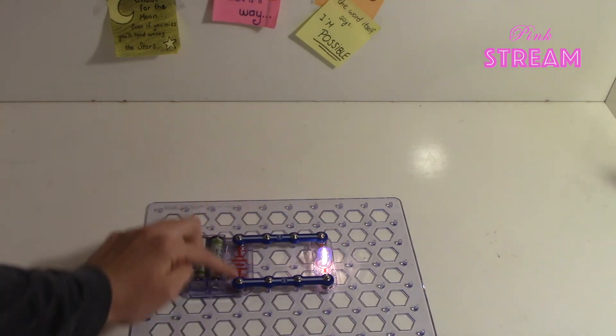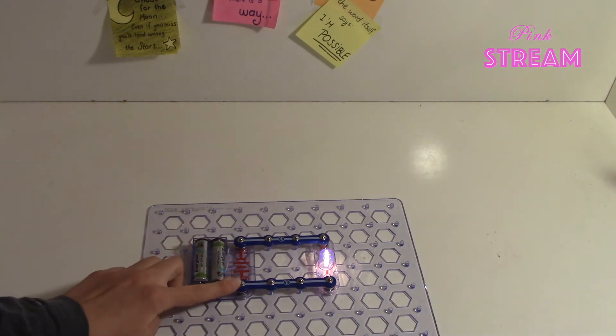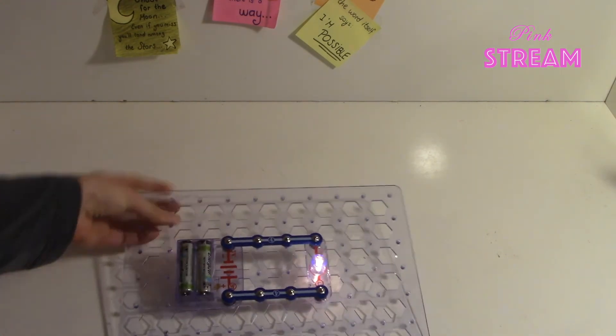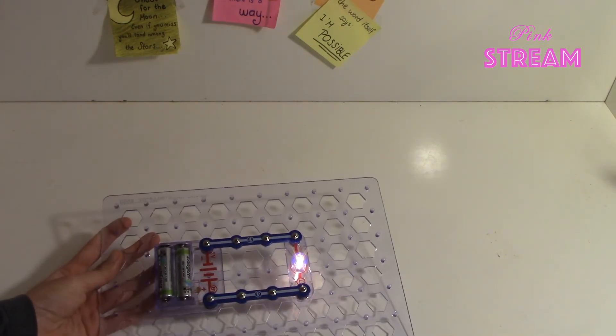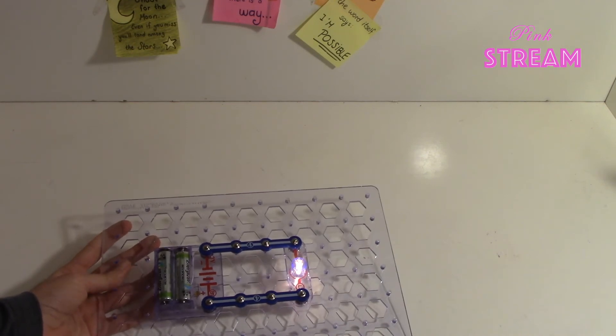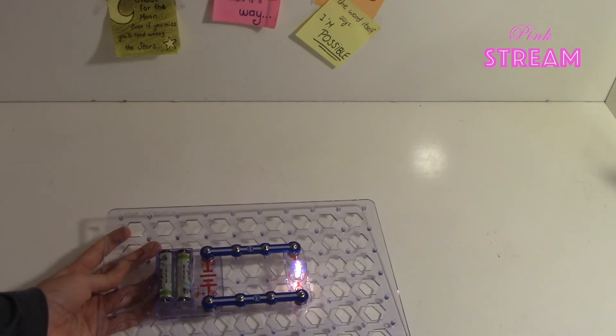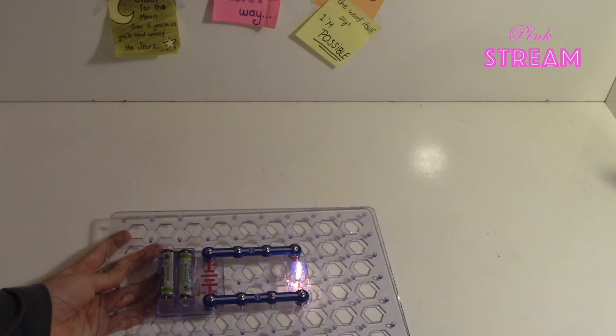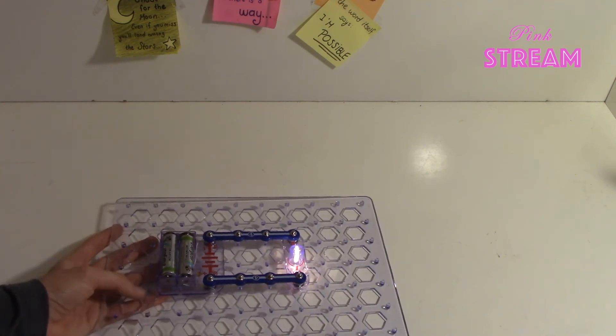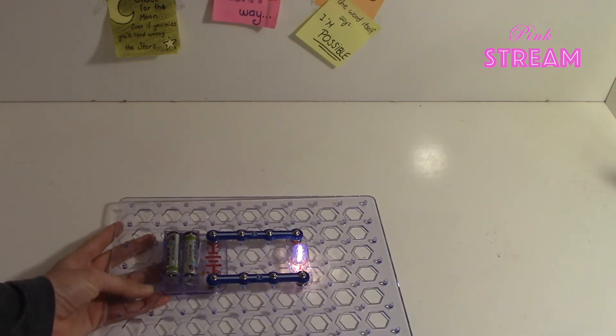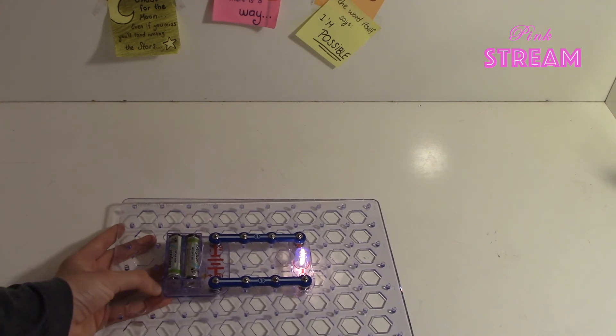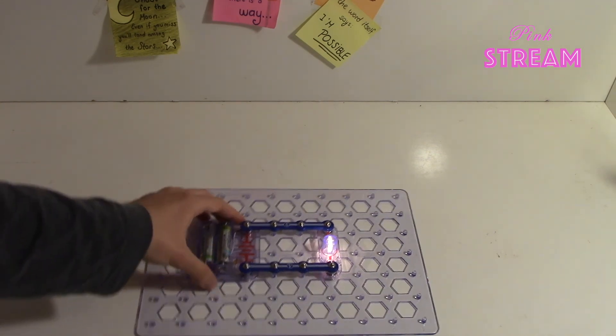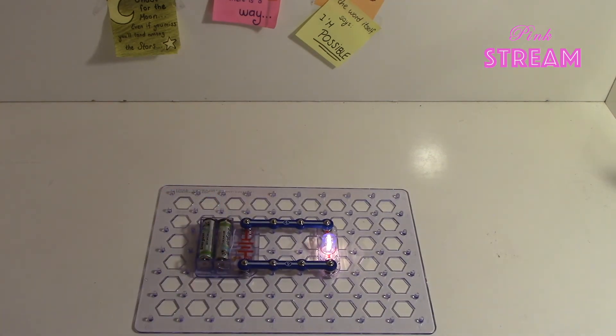This movement of electricity is called current. There are also many other components besides light that work with electricity. My question for you is: look around your house and find things that work with electricity, and try to look at their circuits and batteries to see how they work.